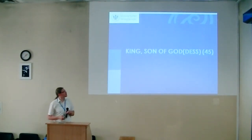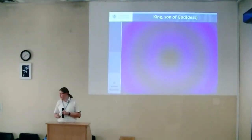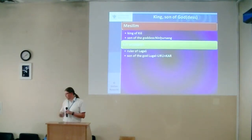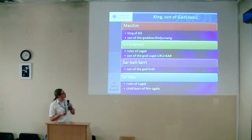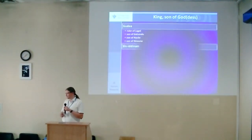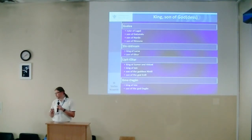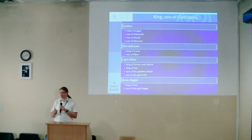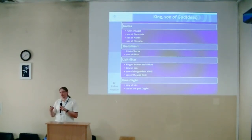We also have kings who were sons of gods or goddesses — 45 cases in our sources. Usually a single divine being appears as parent: goddess Ninhursang, Gadlugal, Urukar, Gad Emril, and goddess Nin-Hagala. But some rulers had more than one divine parent. Gudea of Lagash had three mothers: Gatundu, Nanshe, and Ninisuna. Lipit-Ishtar was son of the divine couple Enlil and Nimlil. And Ishme-Dagan was son of god Dagan — unsurprisingly, given his name.